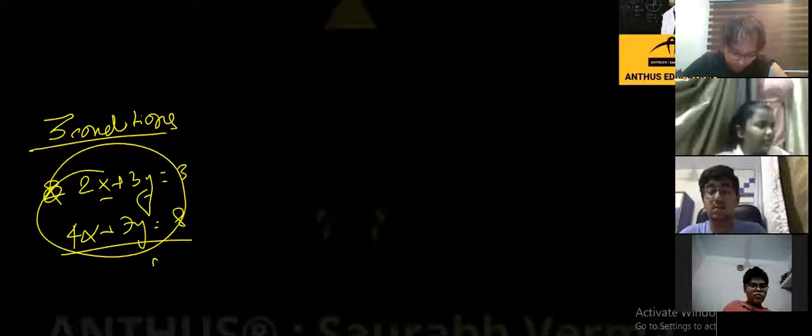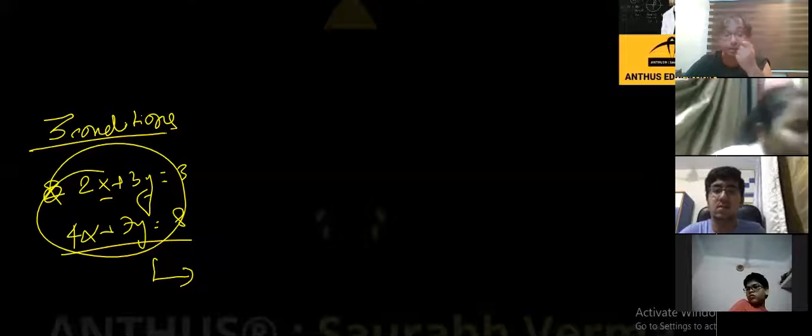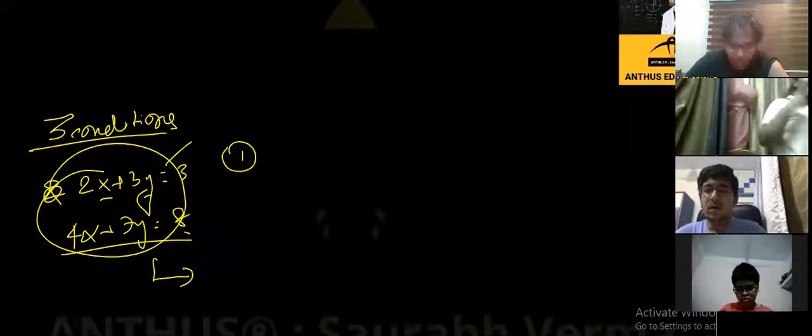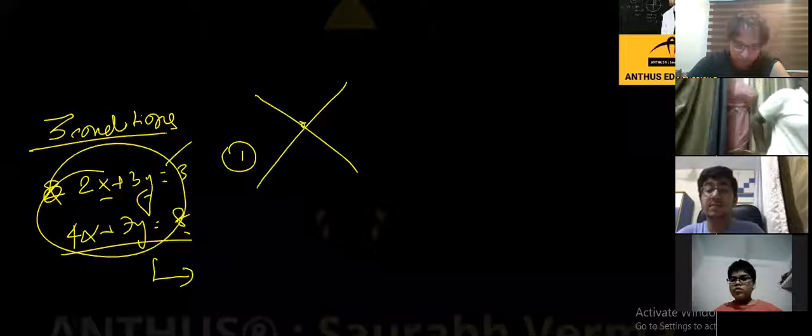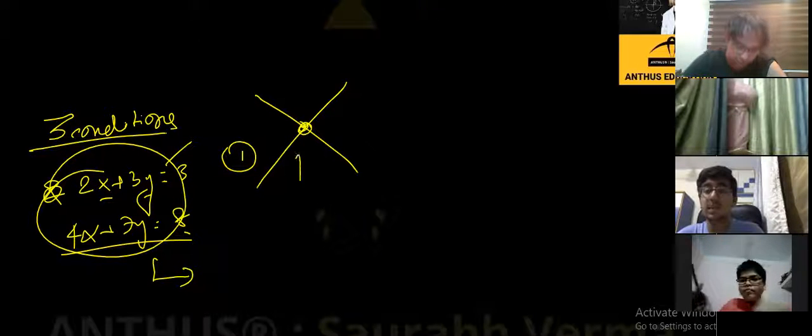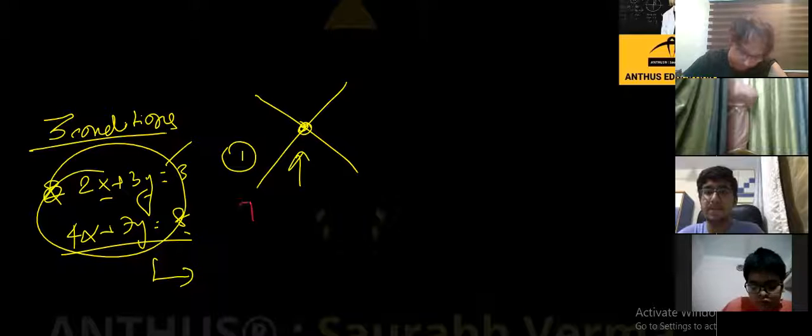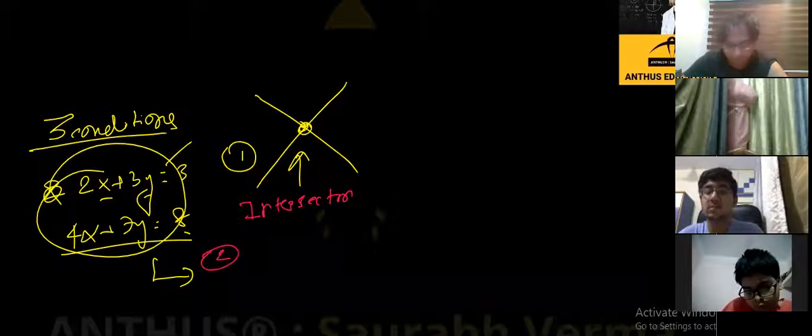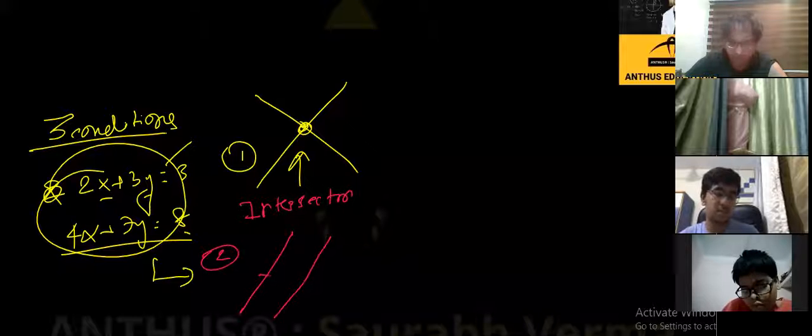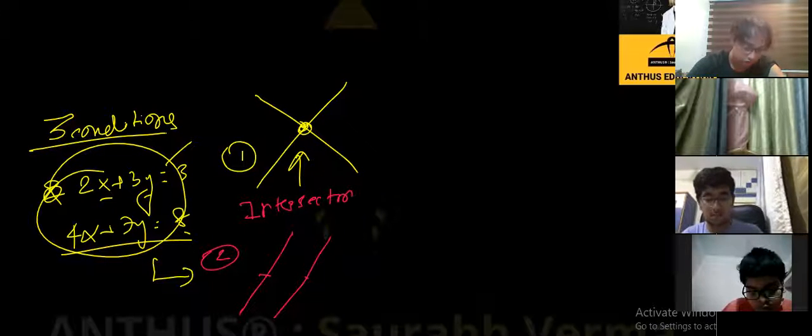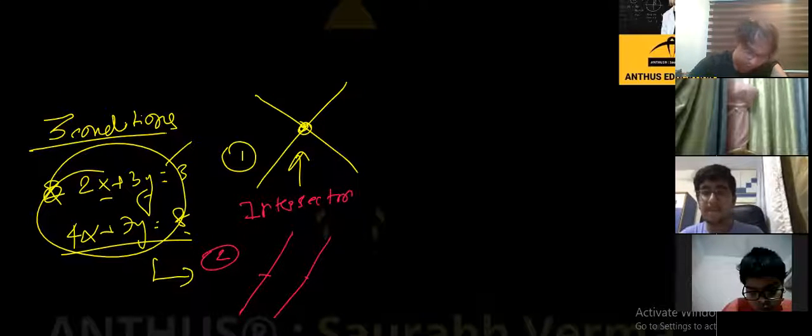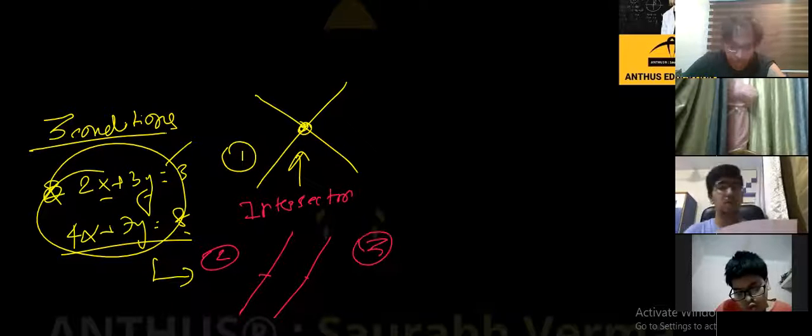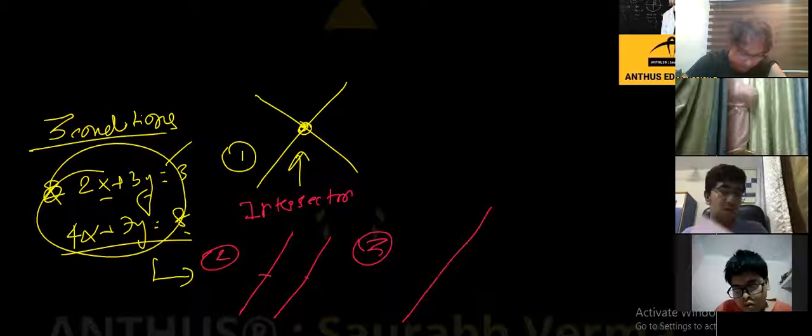What do we have to do? We have to do one thing. There are three conditions. One thing will be that the two equations will be cut - one time it will intersect. The other condition will be that the two are parallel. The third condition is that the two are one here and one here.